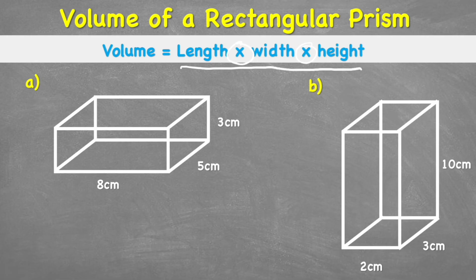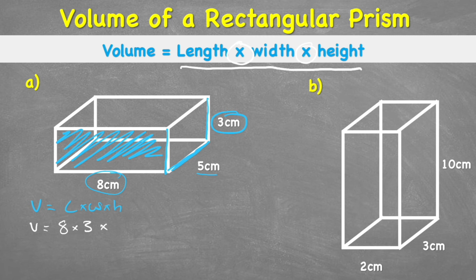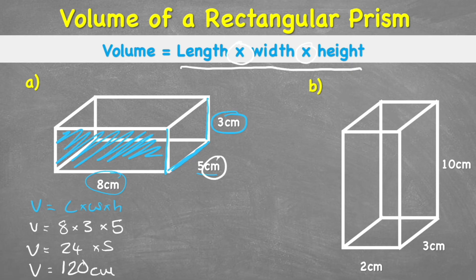Let's look at example one. We have a rectangular prism where the front face has lengths of eight centimeters and three centimeters, and the width is five centimeters. Writing down the formula: volume equals length times width times height. Plugging in the numbers: volume equals eight times three times five, which is 24 times five, therefore volume equals 120 centimeters cubed.